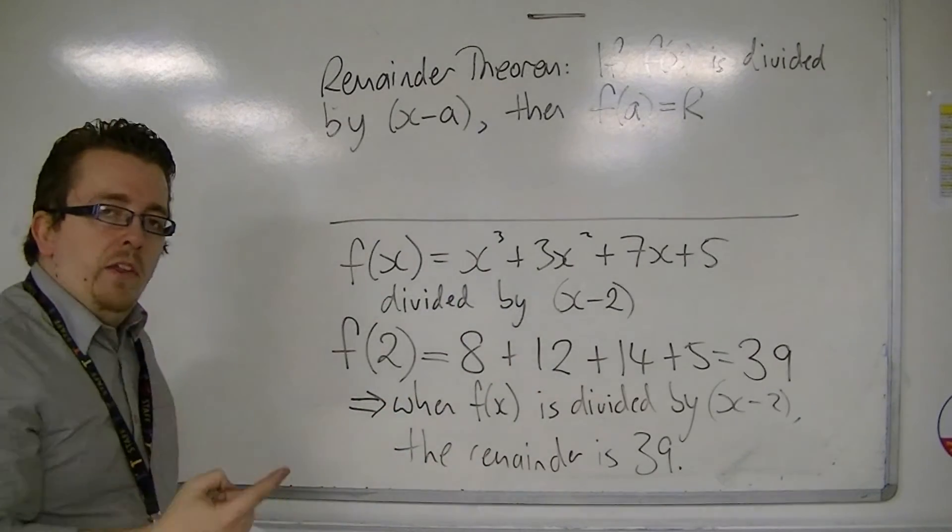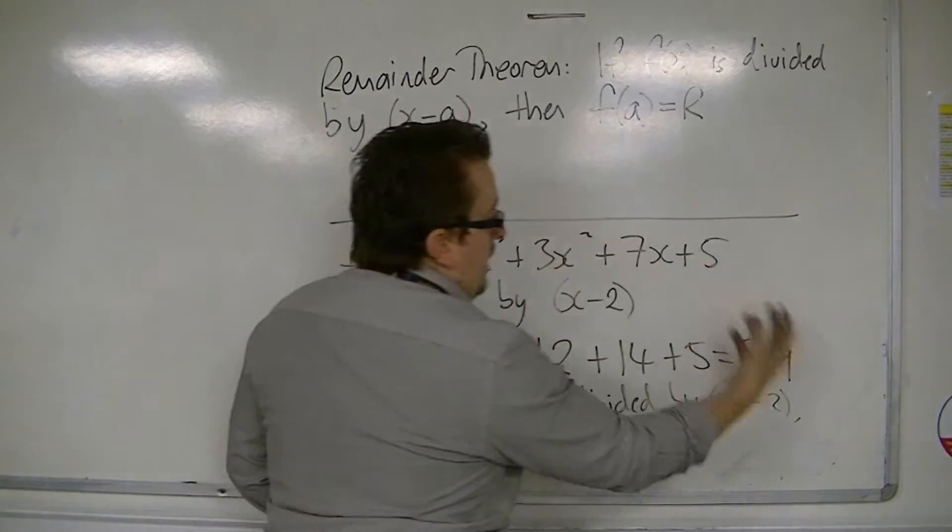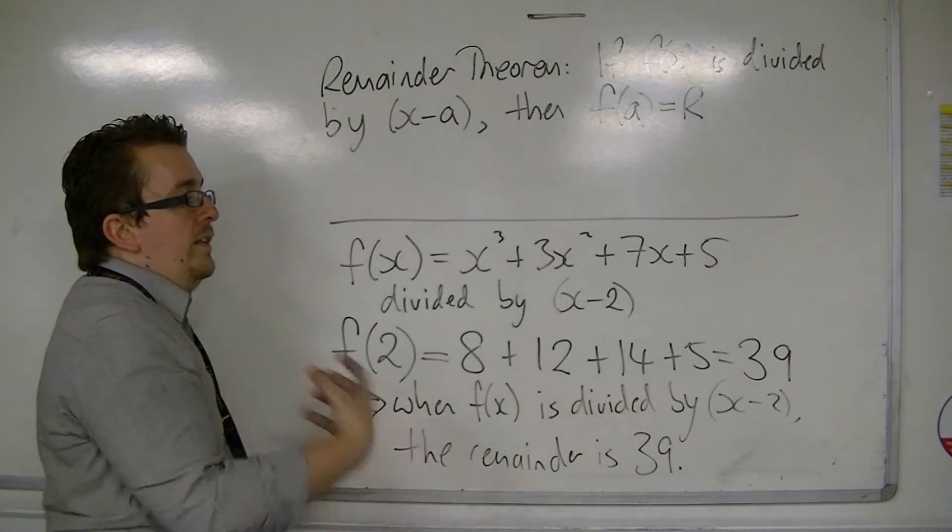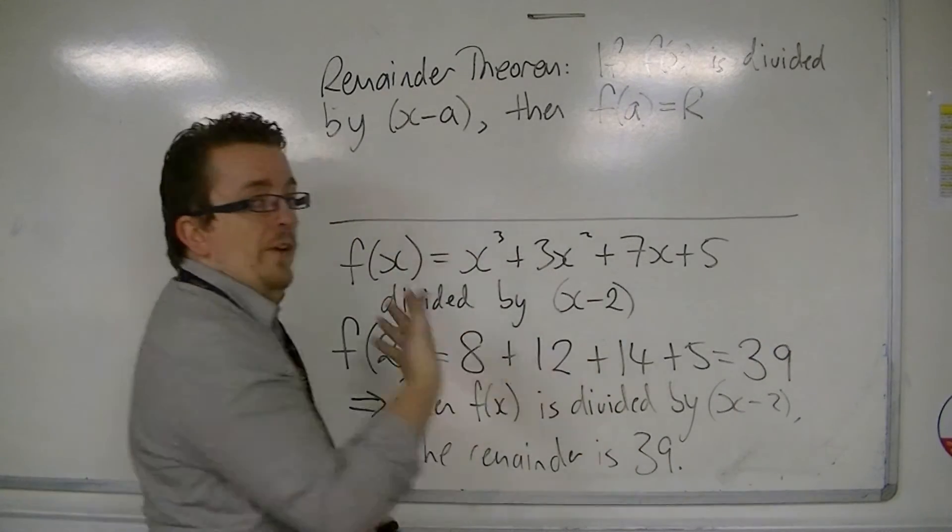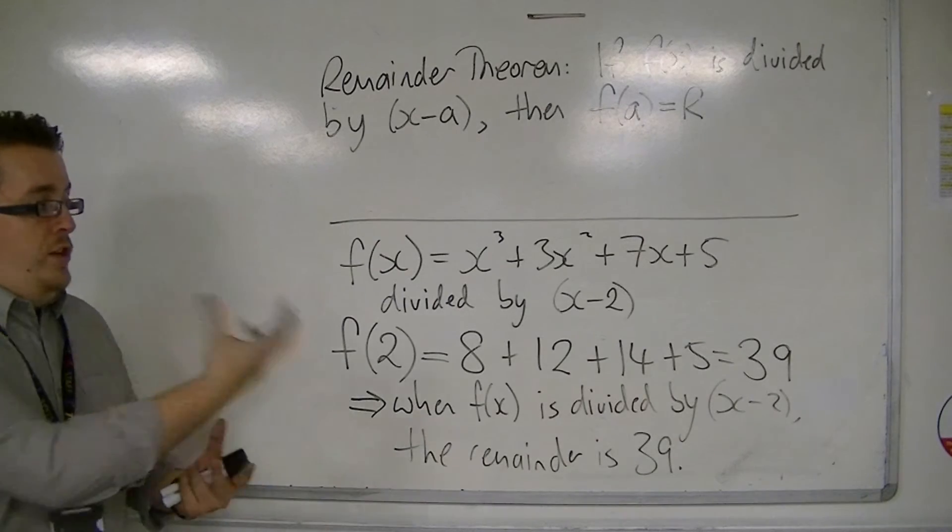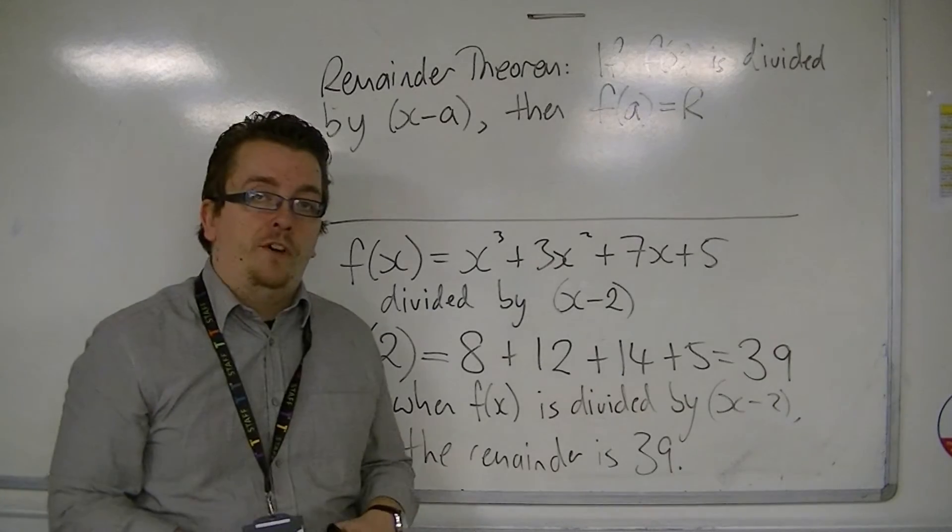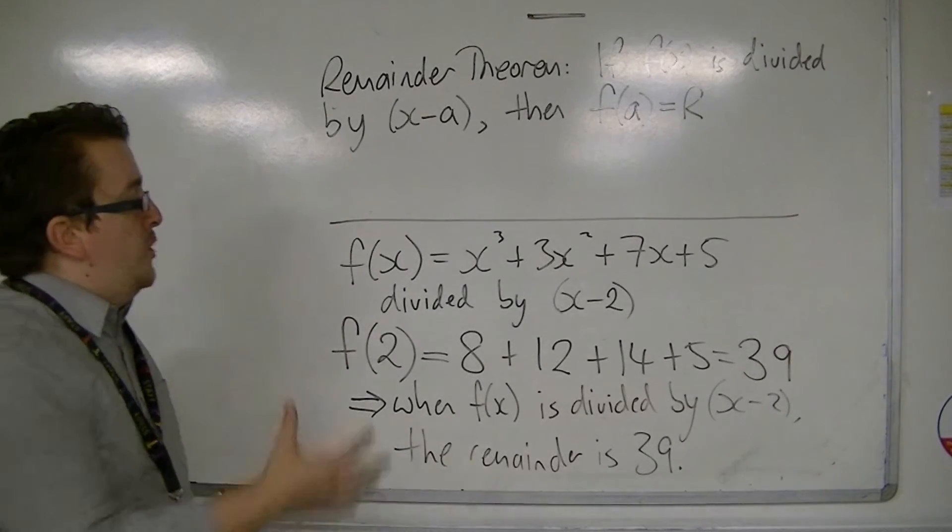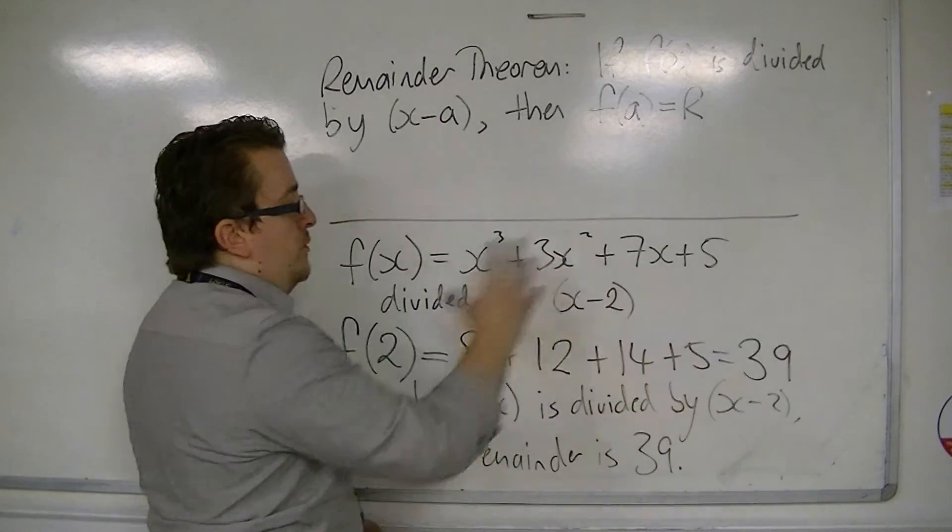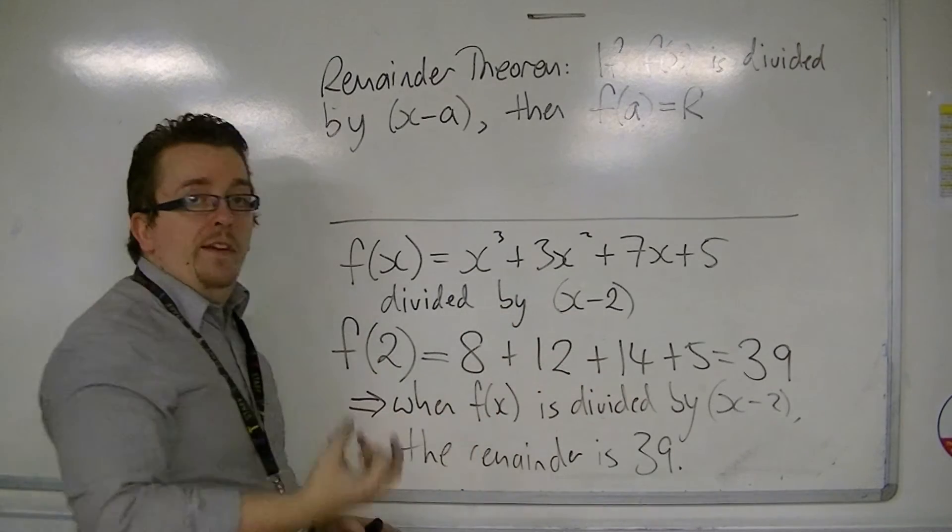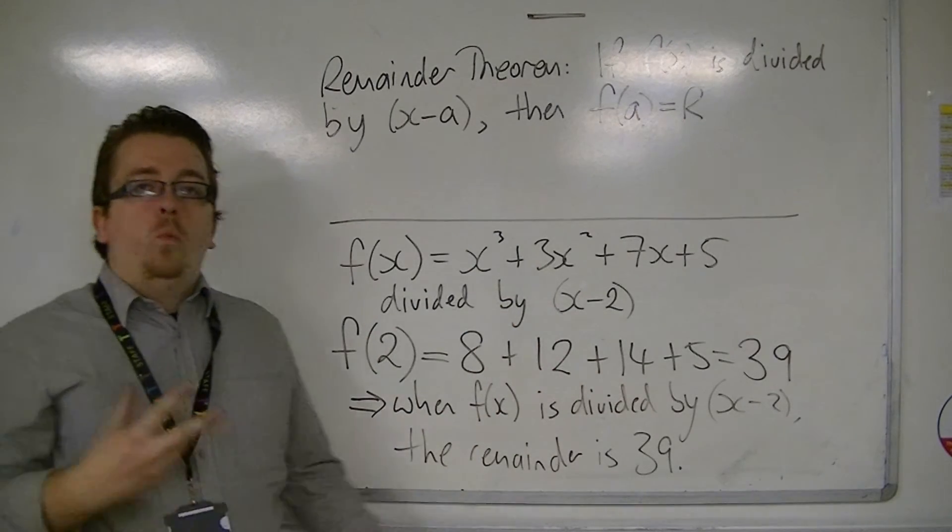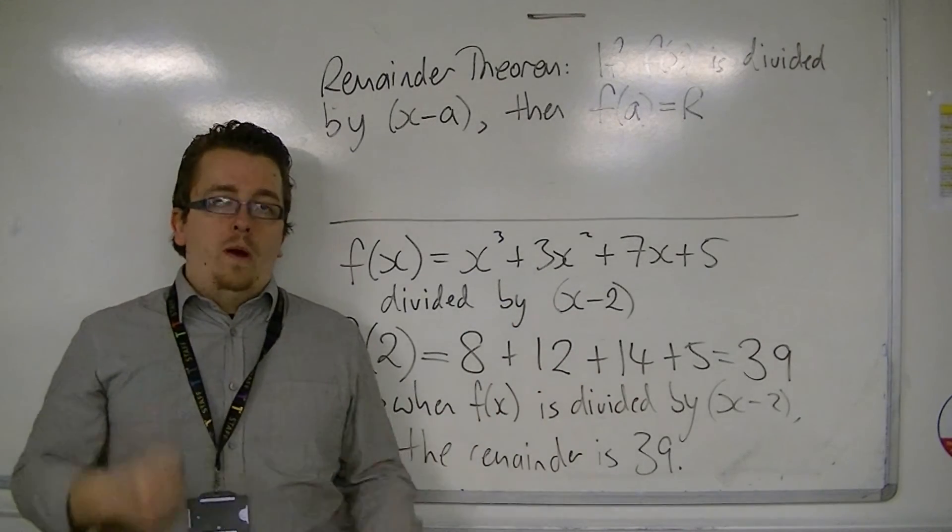But with the remainder theorem, you get a number that isn't 0, and therefore this isn't a factor. When you divide by that x minus 2, you actually get 39, so you get something left over. So the remainder theorem shows that x minus 2 isn't a factor. And you work with them in very similar ways. They just have slightly different conclusions at the end.